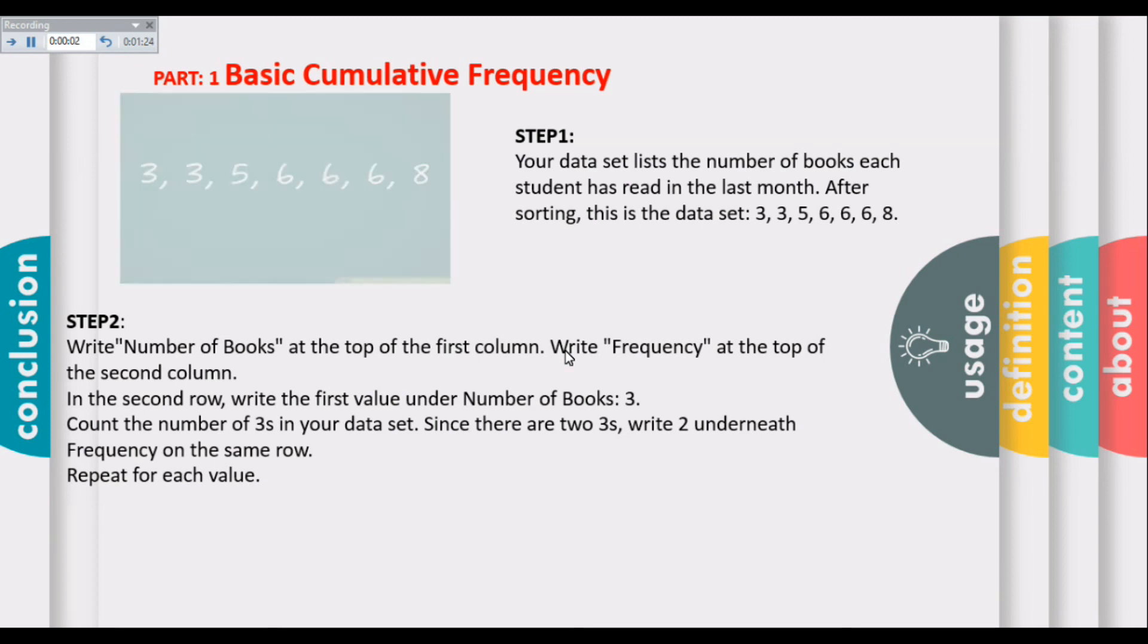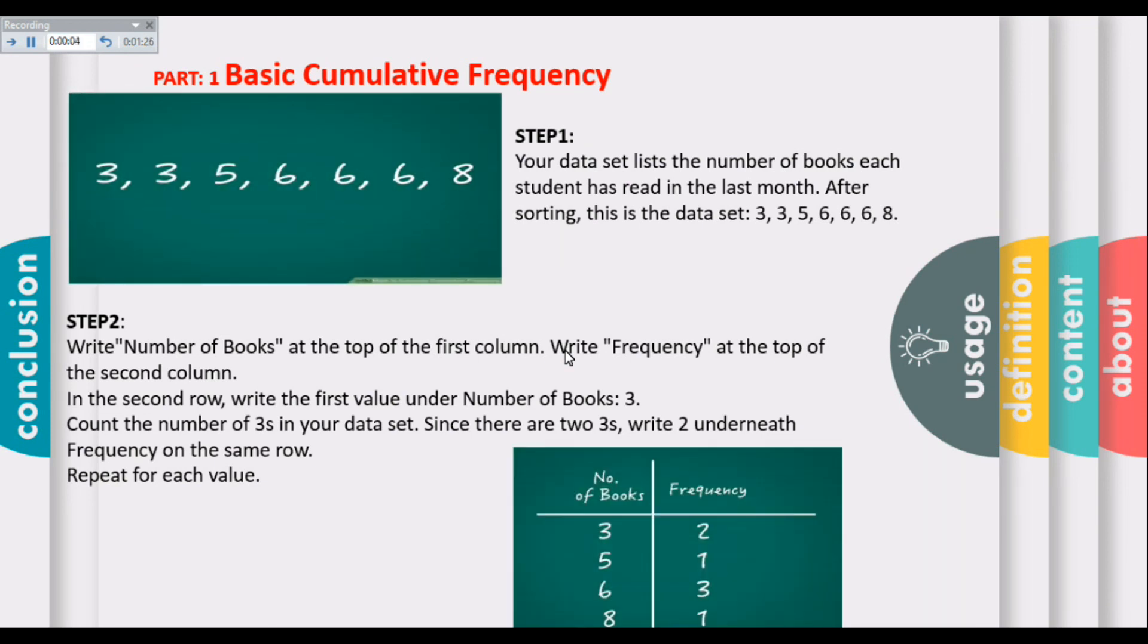The basic cumulative frequency can be calculated by following these steps. Step 1: Your data set lists the number of books each student had read in the last month. We have seven students total: student one read three books, student two read three, student three read five, student four read six, student five read six, student six read six, and student seven read eight.